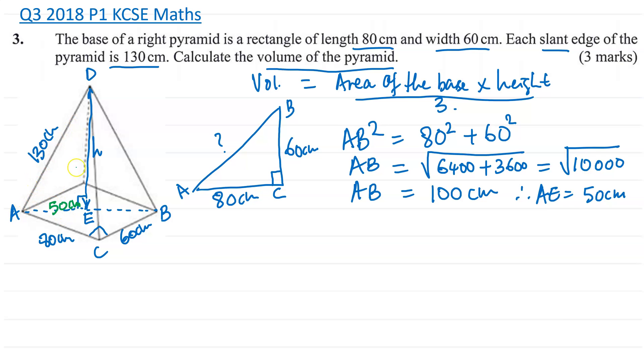Now then I've got two sides. If I look at the triangle ADE, I've got two sides and one missing side, which is the height that we need. So again, I'm going to apply the Pythagoras theorem. I have A here. I have D here, which is the apex. And then I have E here.